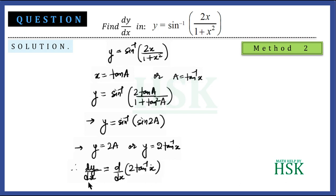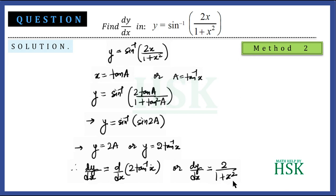Differentiating both sides with respect to x: d/dx(2 tan⁻¹x) = 2/(1+x²), which is the required answer. As you can see, Method 2 is easier because it requires less calculation.